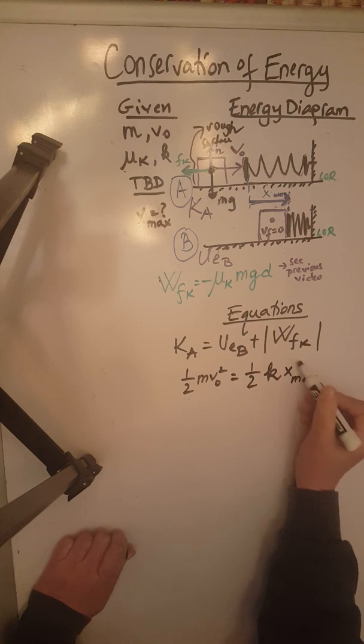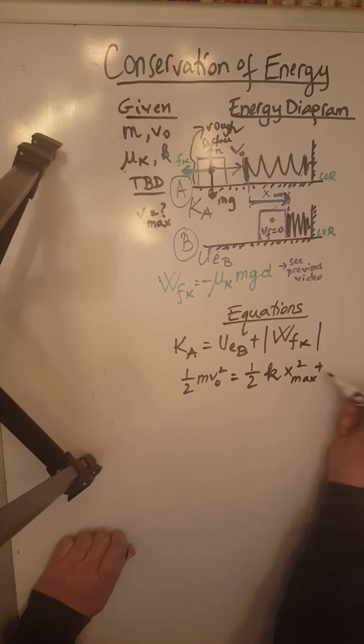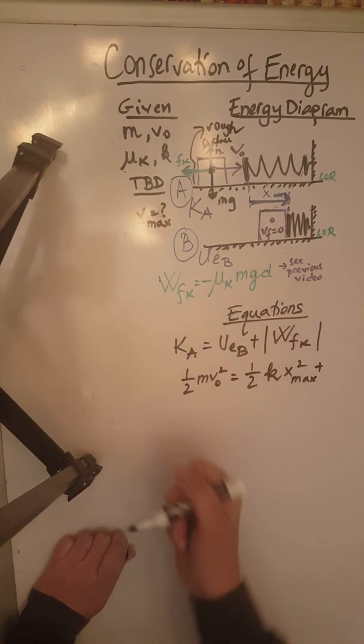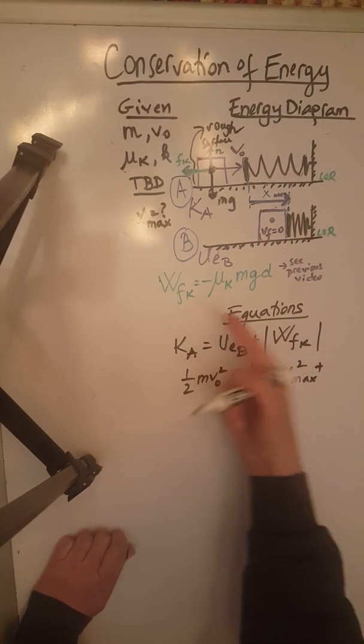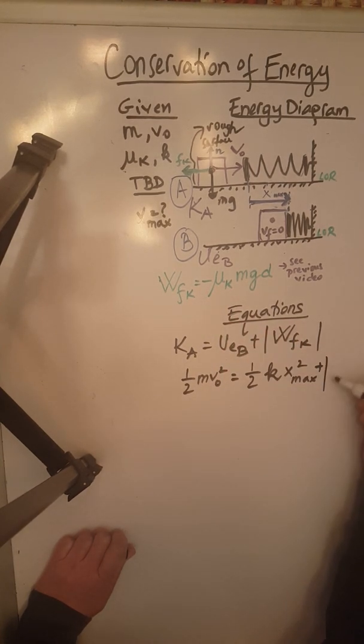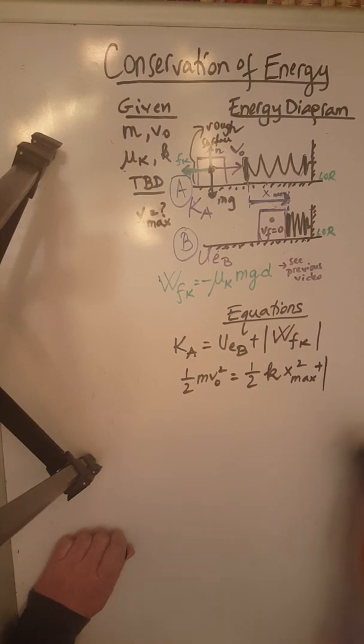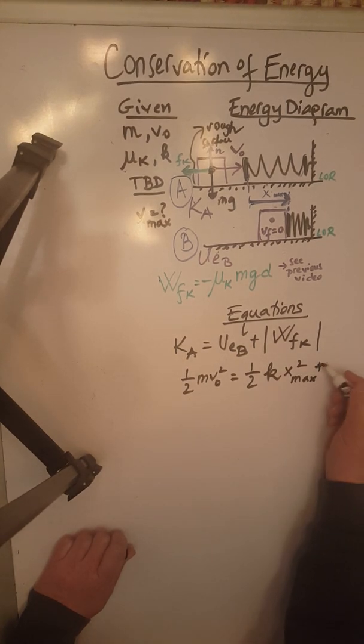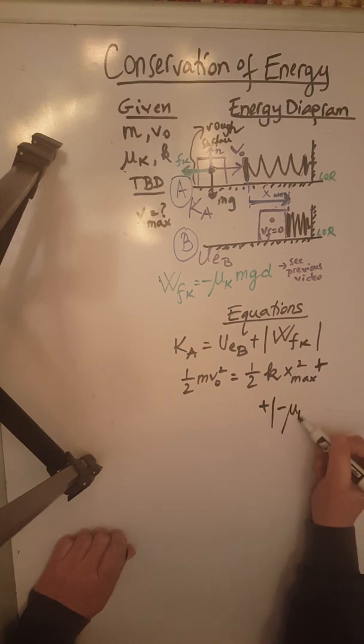which is going to be absolute value of negative mu K m G. Let's write this down here actually, plus absolute value of negative mu K m G.